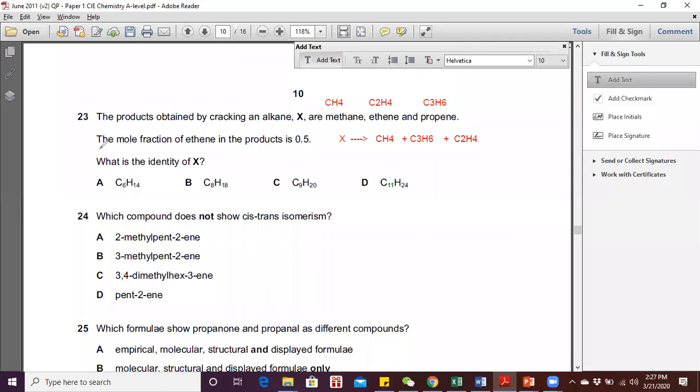The information given is the mole fraction of ethane in the product is 0.5. So what does this mean? If you add up the total mole fraction of all products, it equals 1, or in terms of percentage, 100%.